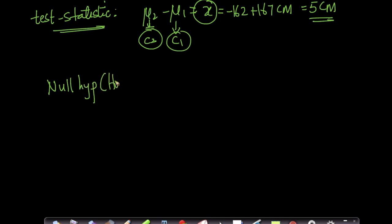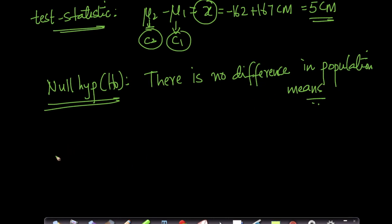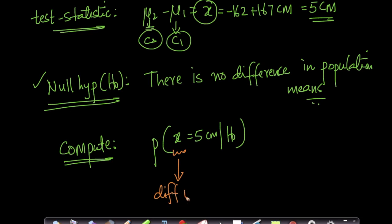Now let's design our null hypothesis. Our null hypothesis will assume that there is no difference in population means of heights of people living in these two cities. Given this null hypothesis, what do we need to compute? We need to compute the probability of X = 5 centimeters given the null hypothesis. X here is the difference in sample means that we observed, with a sample size of 50.